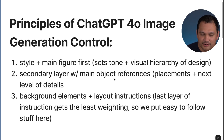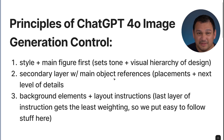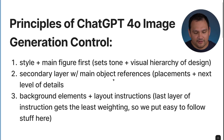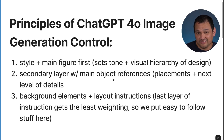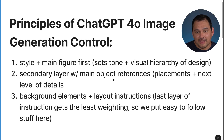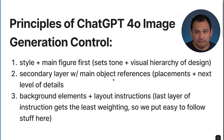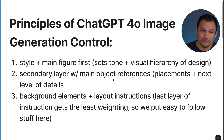In the secondary layer, we're going to have what's essentially a mid ground — the setting that is associated with the main character in the design. The last layer will be background elements and layout instructions. It gets the least weighting, and while we can put a lot of text there, we need to make sure it's easy for the 4.0 image generator to follow.